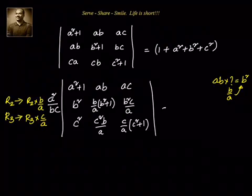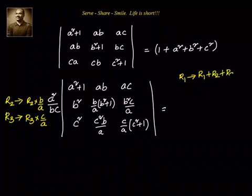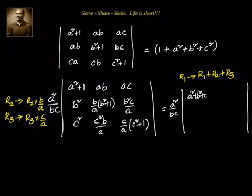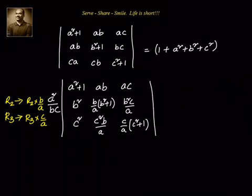Now let us try to go to the next step. What we want to do is apply R1 = R1 + R2 + R3. If we do that, in the first column we get a² + 1 + b² + c², so we can factor out (a² + b² + c² + 1).